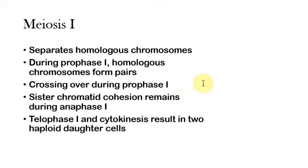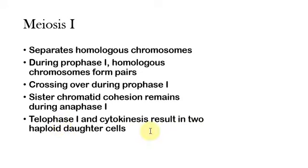After this, you'll have metaphase I where all the homologous chromosomes will wind up in the middle. Then during anaphase I, those sister chromatids will actually still be stuck together — sister chromatid cohesion will still remain. So at the end of meiosis I, each of the cells has pairs of sister chromatids. Telophase I and cytokinesis result in two haploid daughter cells.